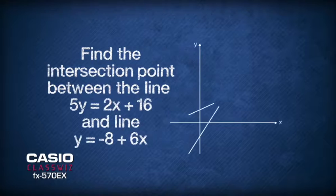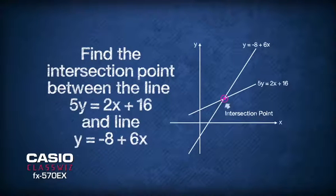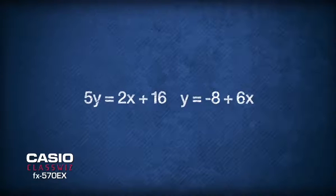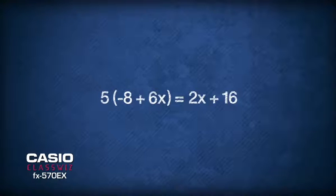To find the intersection point between these two equations, we need to perform simultaneous equation. We shall perform simultaneous equation by elimination, where we substitute y equals negative 8 plus 6x as replacement of the term y in the equation of 5y equals 2x plus 16.